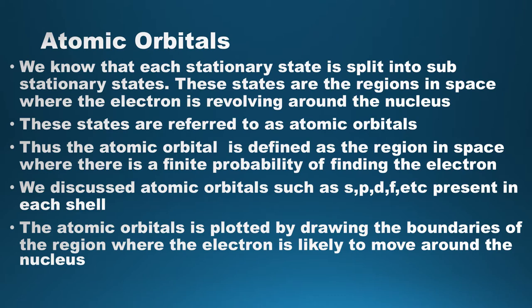We now discuss the shapes of these atomic orbitals. It should be noted that the atomic orbital is plotted by drawing the boundaries of the region where the electron is likely to move around the nucleus.